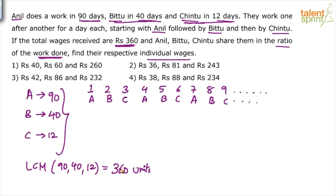Let us assume that the work to be done is 360 units. You have to pack 360 boxes or clean 360 rooms. Anil can do this 360 units of work in 90 days. So how many units will he do per day? 4 units. Anil will do 360 by 90 which is equal to 4 units. Bittu would do 360 by 40 which is 9 units. Chintu would do 360 by 12 which is 30 units per day.